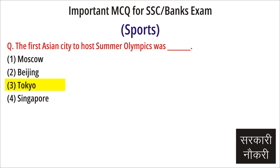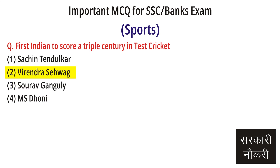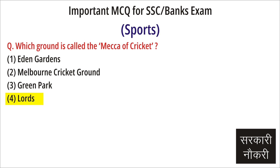Question: Dipa Karmakar is the first Indian woman to have qualified for Rio Olympic Games in which sport? Answer: Gymnastics. Question: The first Asian city to host Summer Olympics was? Answer: Tokyo. Question: First Indian to score a triple century in Test Cricket? Answer: Virender Sehwag. Question: Which ground is called the Mecca of Cricket? Answer: Lord's.